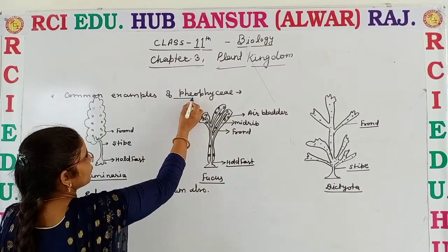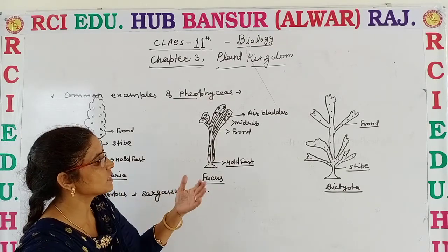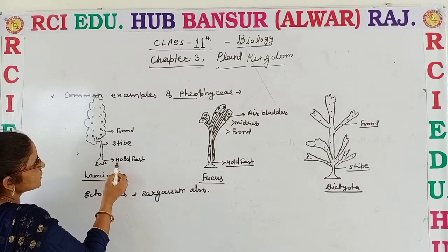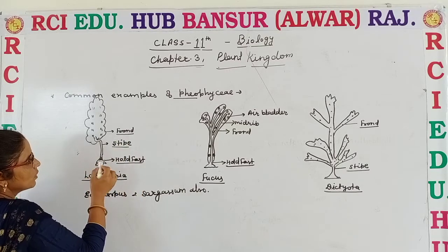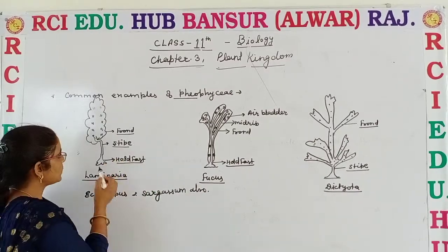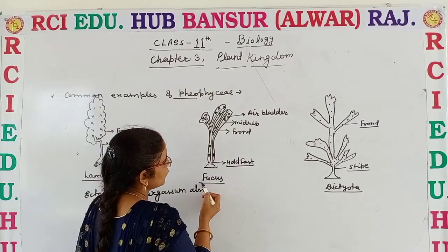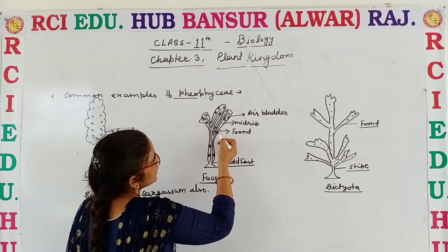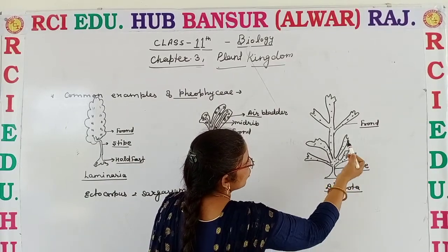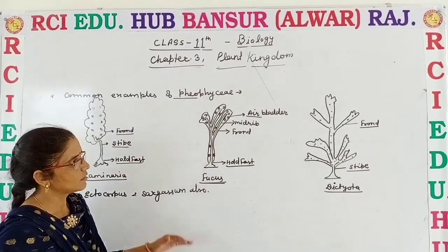The common examples of Phaeophyceae are: Laminaria, Ectocarpus, Sargassum, Fucus, and Dictyota. Three diagrams are given here. In Laminaria, as visible, it is divided into holdfast, stipe, and frond — the leafy photosynthetic portion is known as frond, the stalk-like structure is stipe, and the part attached to substratum is holdfast. Similarly in Fucus, holdfast and frond are present, with a midrib and air bladders visible. In Dictyota, there is a stipe and frond. These are the common examples of Phaeophyceae.